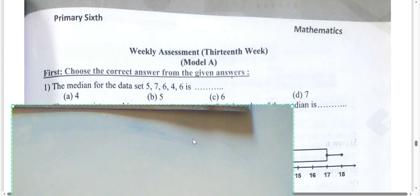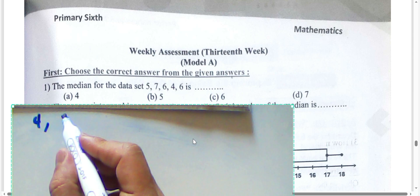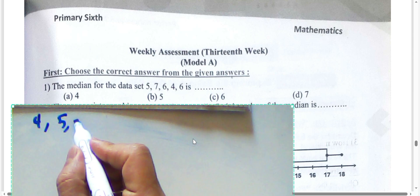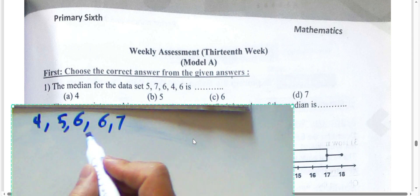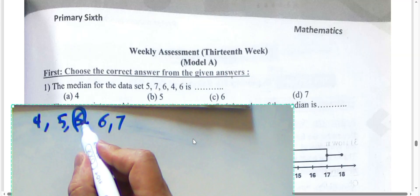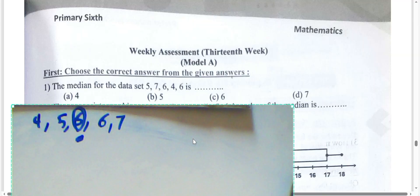Arrange the digits: four, five, six, six, seven. The number six lies in the middle, so the median is six. The answer is letter C.